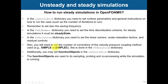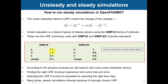You set everything up in controlDict, fvSchemes, and fvSolution, and you need to use the right solvers — SIMPLE and SIMPLE-C — and set up your function objects. To control the iterative marching, because in unsteady simulations we have time, in steady simulations you don't have time. So to iterate, you use under-relaxation. Under-relaxation controls the change of variables, adding an under-relaxation factor, and this is how you march iteratively toward a steady solution.